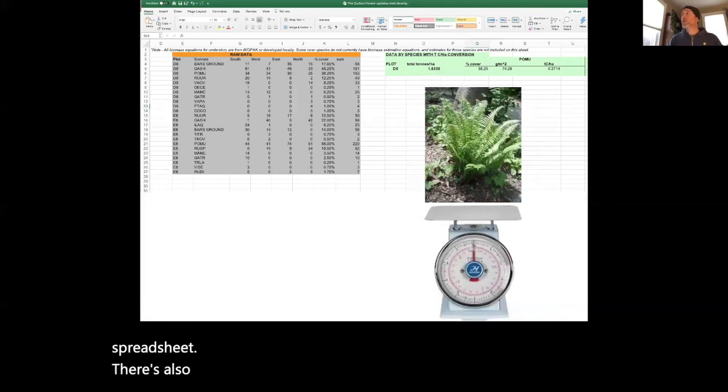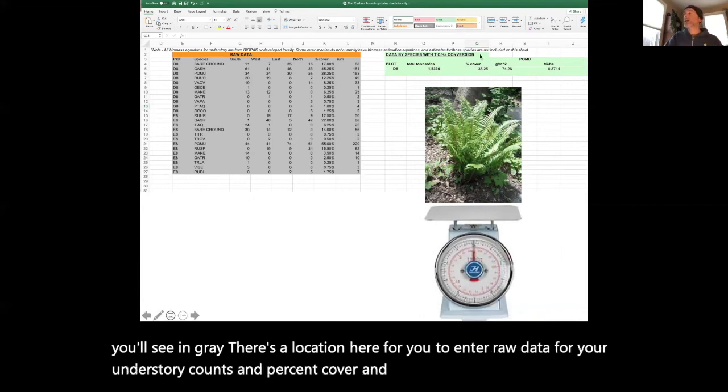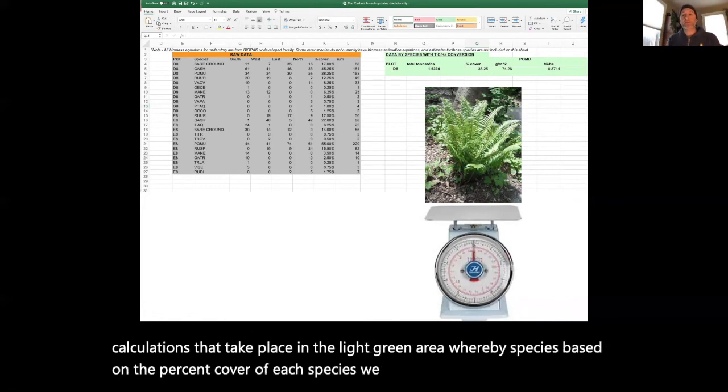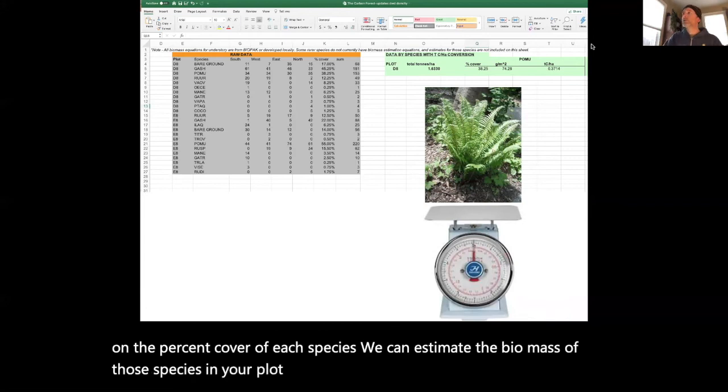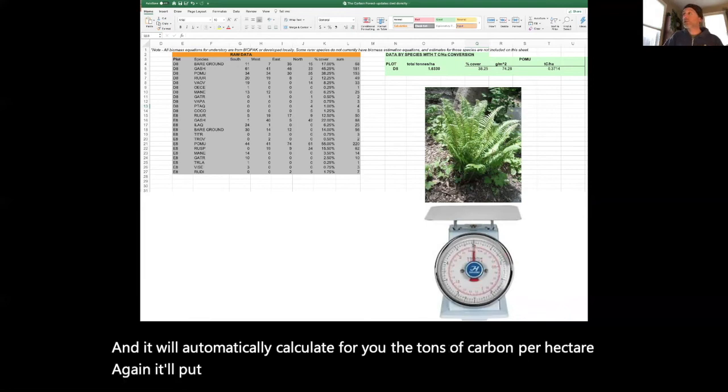There's also a sheet here for understory. In the understory sheet, you'll see in gray there's a location for you to enter your raw data for your understory counts and percent cover. Then there is a series of calculations that take place in the light green area where by species, based on the percent cover of each species, we can estimate the biomass of those species in your plot. All you have to do is enter your data here on the sheet in gray and then enter your percent cover by species. It will automatically calculate for you the tons of carbon per hectare and put that on that front sheet.